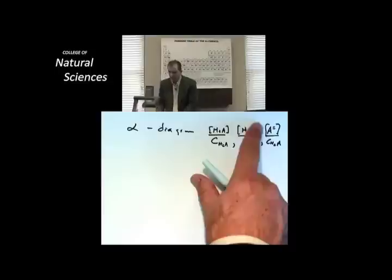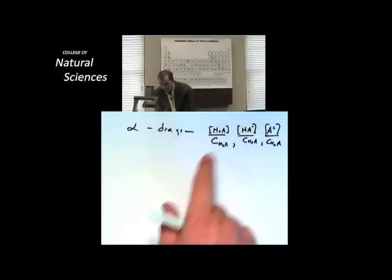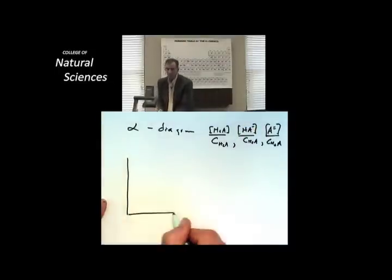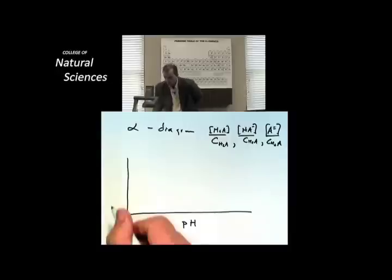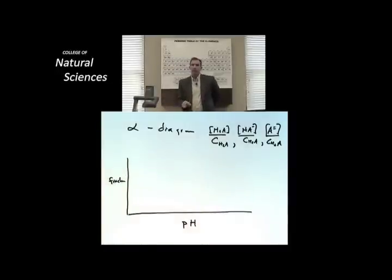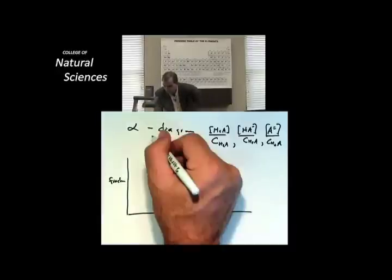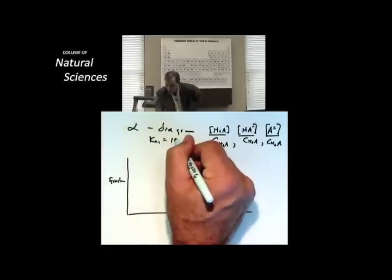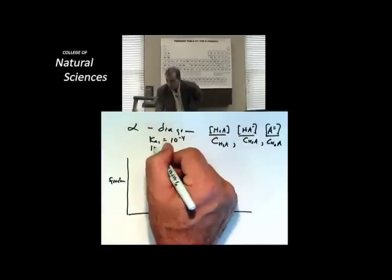Well I can actually draw alpha diagrams that show off these fractions pretty easily by doing the following. I'm going to talk about this fraction over here as a function of pH, and the first thing I'm going to do is realize this really neat idea. Suppose I've got a K value equal to 4 times 10 to the minus 4 for the first dissociation and a K value equal to 10 to the minus 10 for the second dissociation.